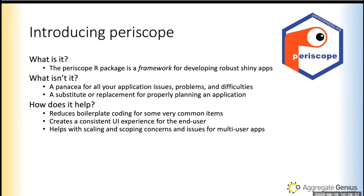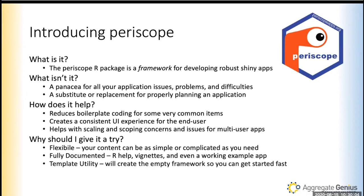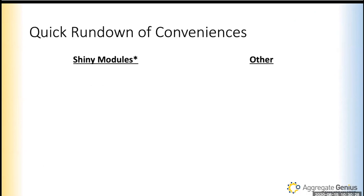This package makes it very obvious where things go and keeps your scopes as safe as possible. You know when you're making something global and when you're making it local to the user session. It is very similar to programming traditional Shiny applications — we tried to make it as familiar as possible. It is not prescriptive; your content can be as simple or as complicated as you need. It's totally documented with R help, vignettes, and an example app. You can template an app and get up and running really fast.